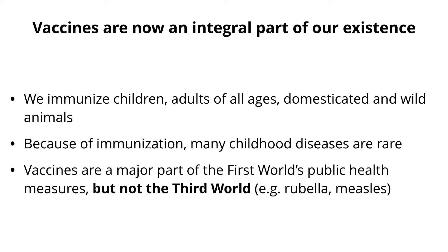Vaccines are now part of our existence — part of basic health care in many countries. We immunize children, we even immunize adults, we immunize our pets, and we immunize wild animals against rabies by dropping vaccine-laced bait into the forest. Many childhood diseases are rare now. Growing up, I always got measles, mumps, rubella, chickenpox — all my friends had these illnesses. Now nobody has them because of vaccination. Unfortunately, this is a first-world development. Third-world countries still don't immunize enough, and there are still many, many cases of measles globally.